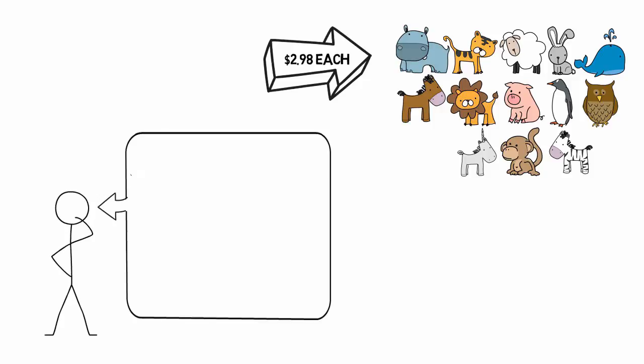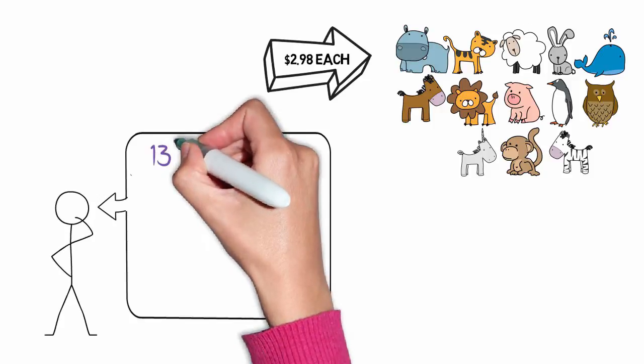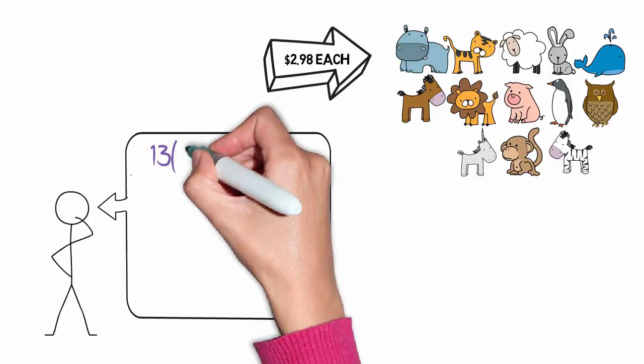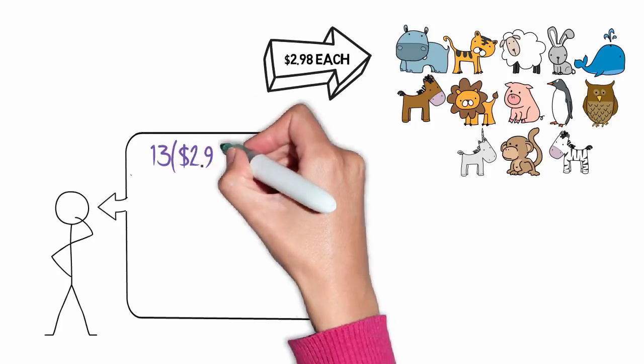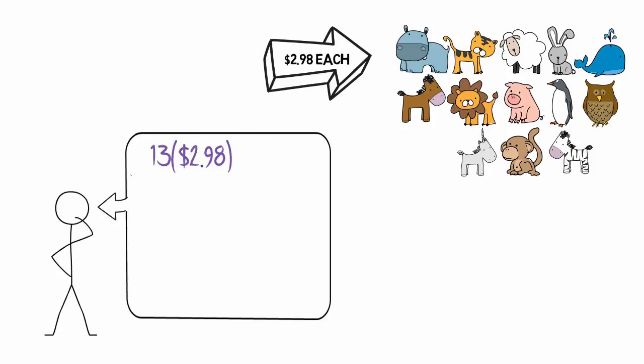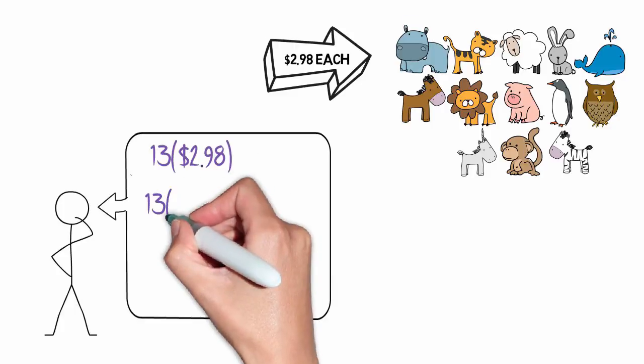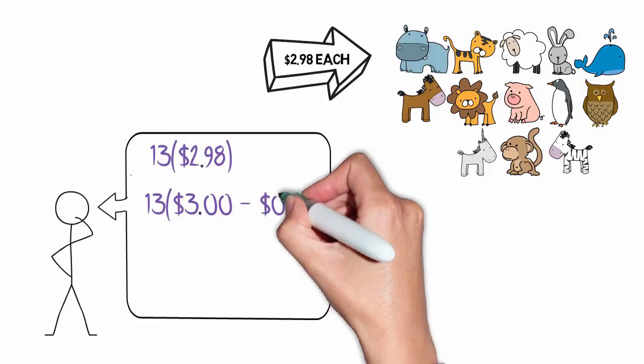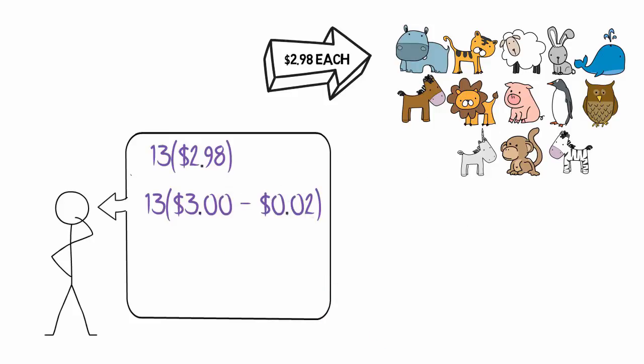Let's say, for example, you bought thirteen items and each item cost two dollars and ninety-eight cents. That's going to be kind of a nuisance of a problem to solve. So what I'm going to do is rewrite that problem as thirteen times the quantity of three dollars minus two cents.